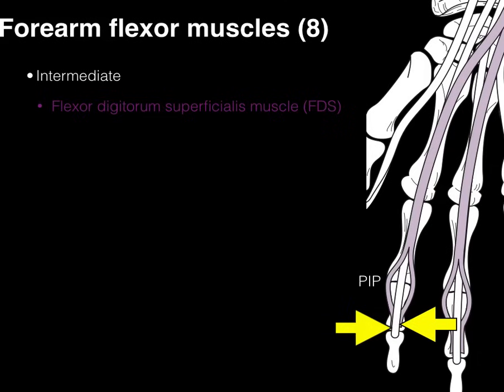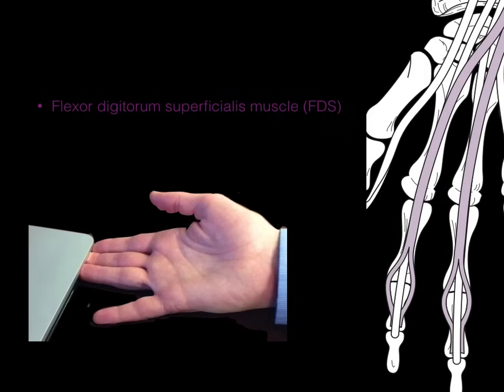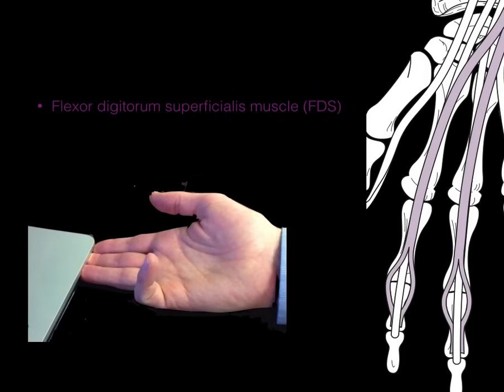To isolate the FDS from the flexor digitorum profundus, take three of the four lesser digits and hold them extended, then contract. The primary joint being acted upon is the PIP. If you wiggle the free digit, it's very loose because you've removed the biomechanical advantage by stretching out three tendons of the FDP.